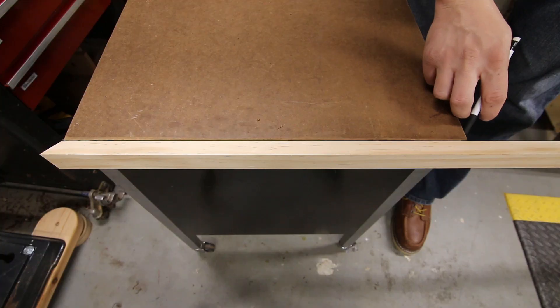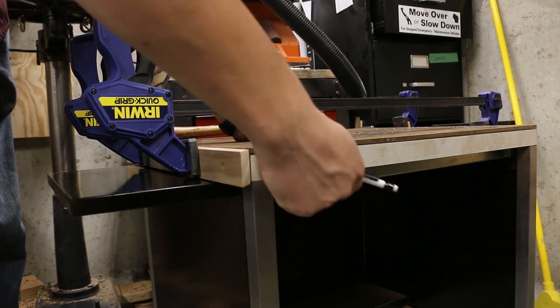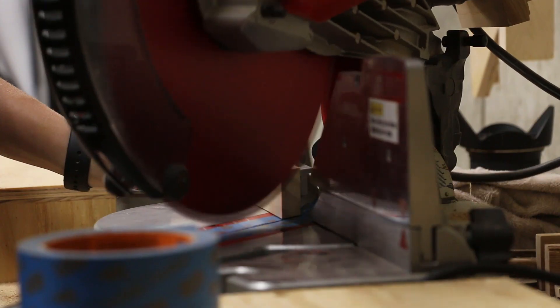Next I need to cut and attach some trim to go around the sides of the tabletop. So I'll rough cut those on the miter saw. And then I'll mark them more precisely on the table itself. Cut them to final length and screw them into place.